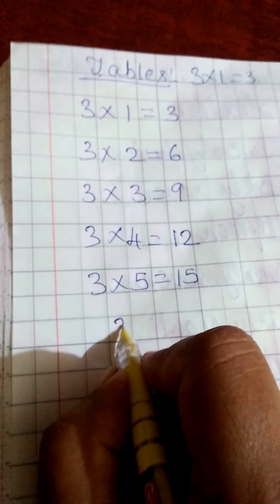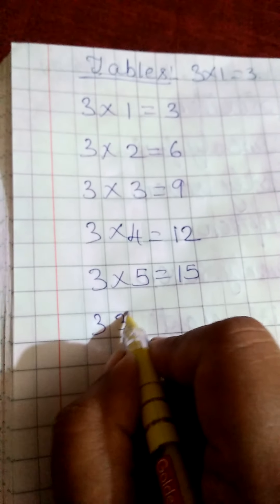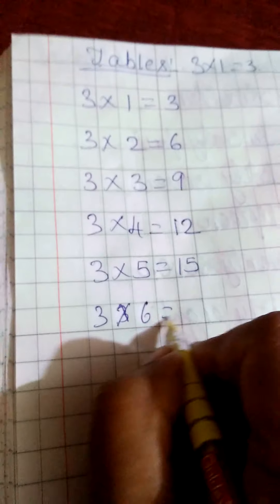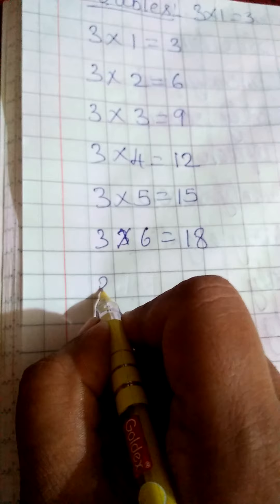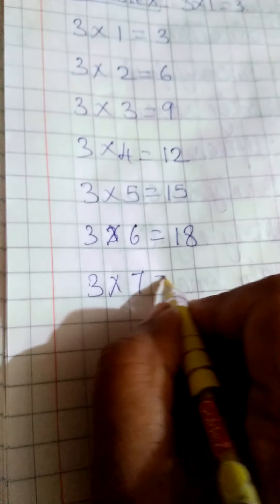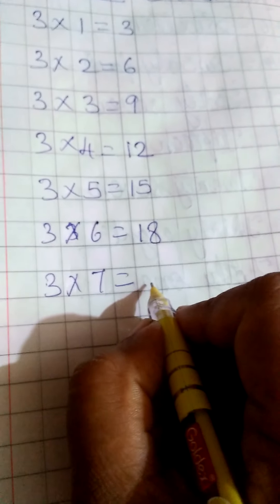Next, 3 sixes are 18, then 3 sevens are 21.